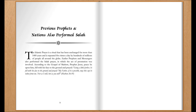Previous Prophets and Nations Also Performed Salah. The Islamic prayer is a ritual that has been unchanged for more than 1,400 years and is repeated five times a day by hundreds of millions of people all around the globe. Earlier prophets and messengers also performed the Salah prayer, in which the act of prostration was involved. According to the Gospel of Matthew, Prophet Jesus, peace be upon him, fell with his face to the ground and prayed: 'My father, if it is possible, may this cup be taken from me. Not as I will, but as you will.' Matthew, chapter 26, verse 39.